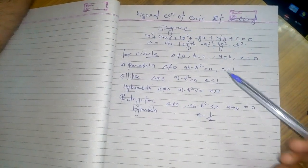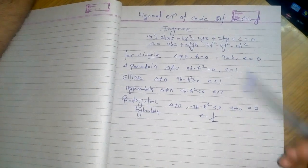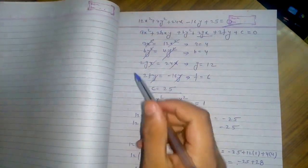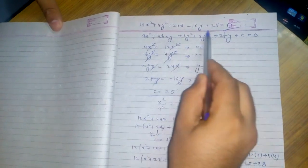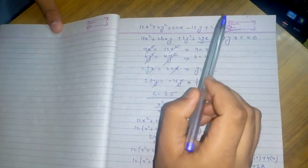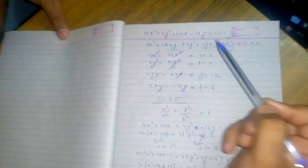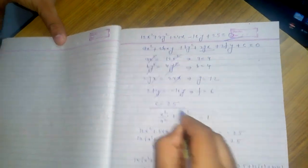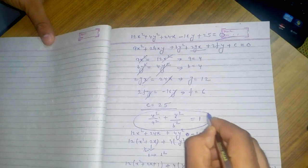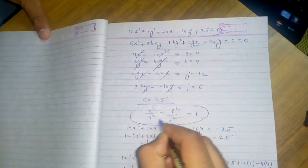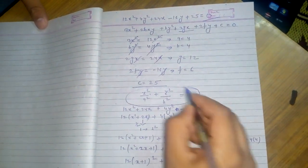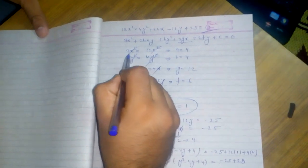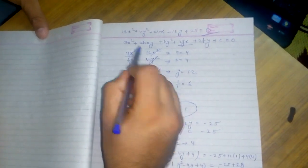Now we will solve a problem where a second-order conic equation is given and we need to convert it to ellipse form. The general equation of an ellipse is x²/a² + y²/b² = 1. First, we take the ax² term and compare it.